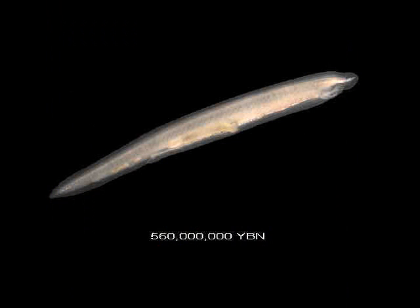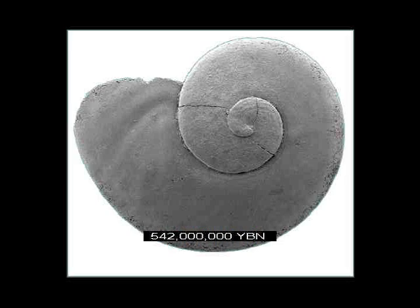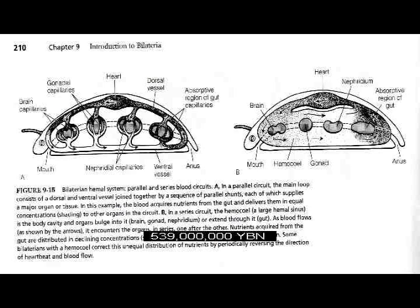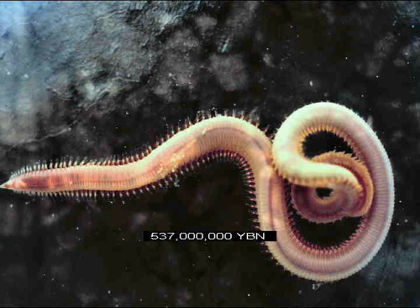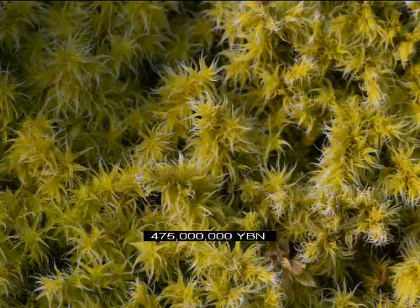Tunicates. First fish. Arthropods — insects and crustaceans. First shell or skeleton. Mollusks. Heart. Segmentation. Vertebrates — ancestor of most fish and all amphibians, reptiles, mammals, and birds.